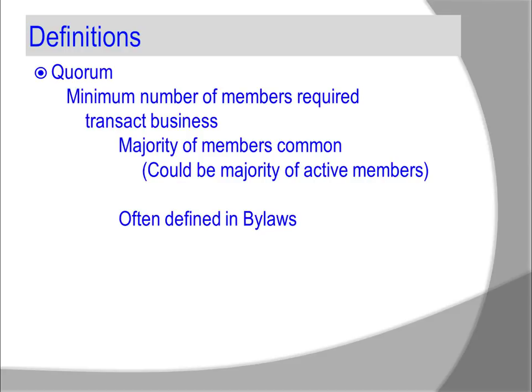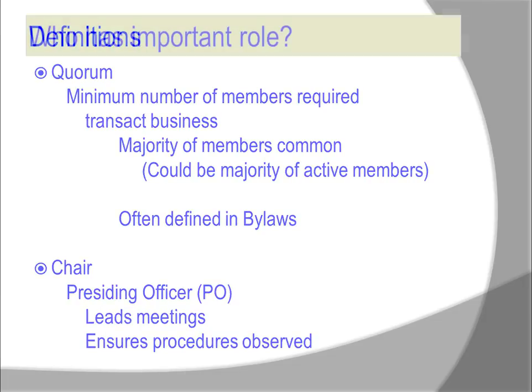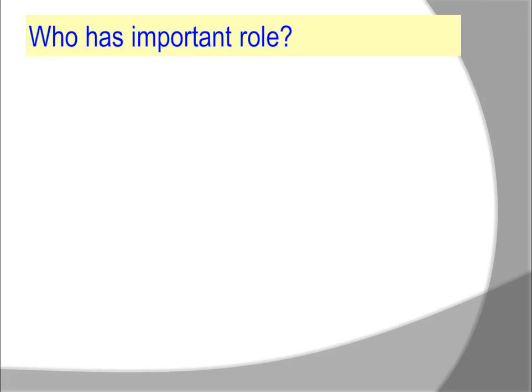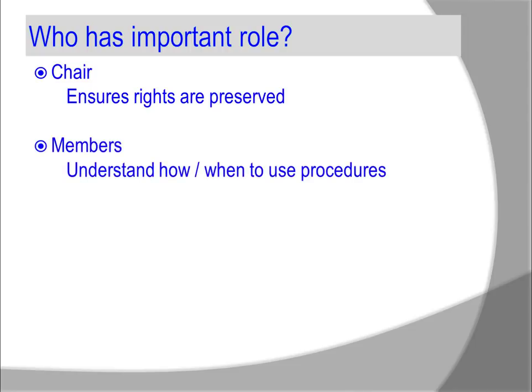What is a quorum? A quorum is commonly a majority of members, but it could be a majority of active members. A quorum is often defined in the bylaws. How about a chair? A chair is a presiding officer that leads the meetings and ensures the procedures are observed. The chair has an important role to ensure the rights are preserved, but also the members need to understand how and when to use procedures — everyone.